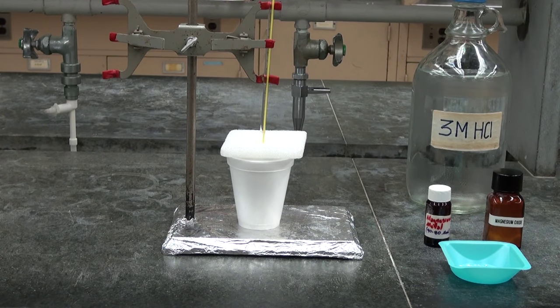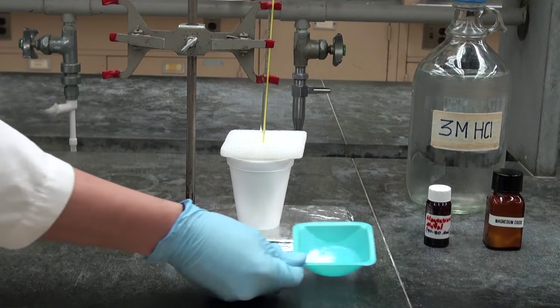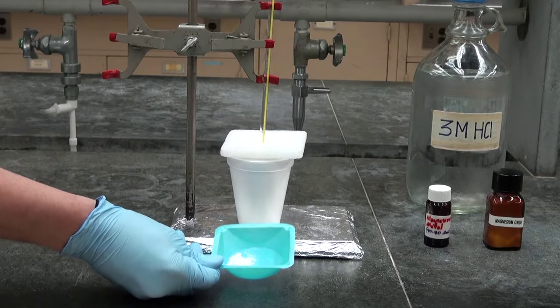On an analytical balance, we have weighed out about 0.6 grams of magnesium oxide in a small weighing boat.